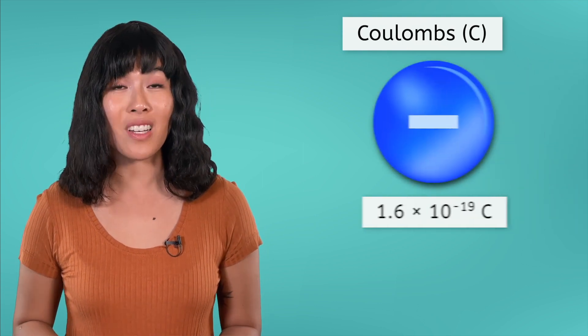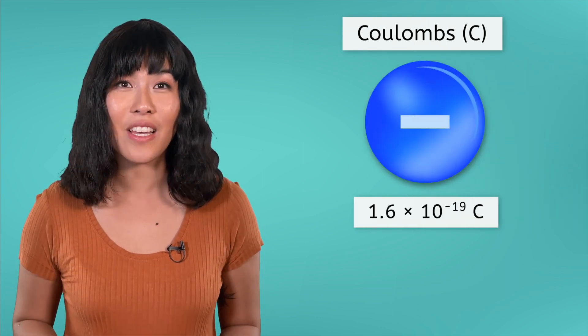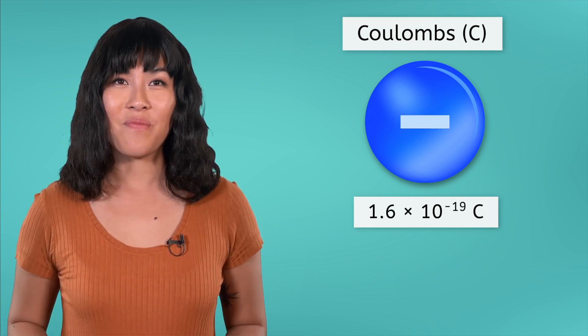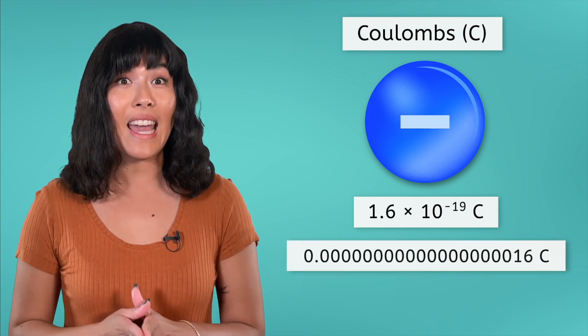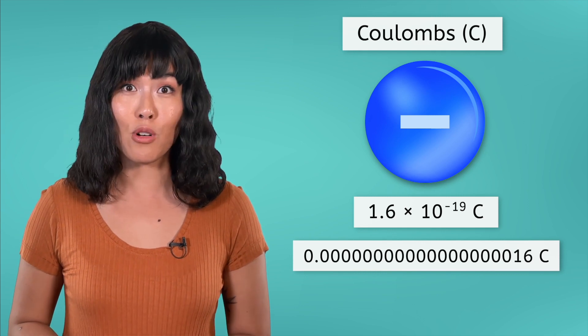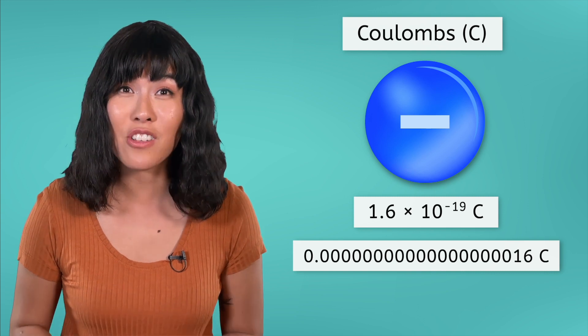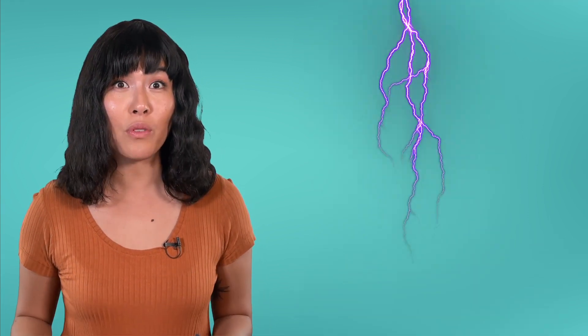The charge in coulombs on a single electron is tiny, 1.6 times 10 to the negative 19th. In standard form, there would be 18 zeros after the decimal before our first digit. But remember, an electron is unimaginably small. That lightning bolt that almost got me earlier probably had at least 20 coulombs of charge. So a single coulomb is a fairly significant amount of charge.